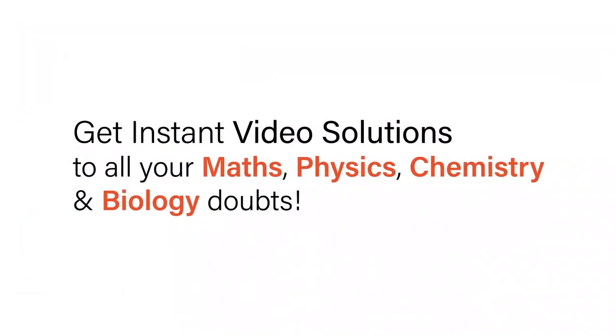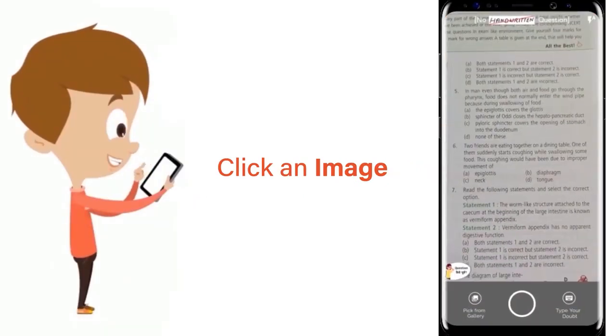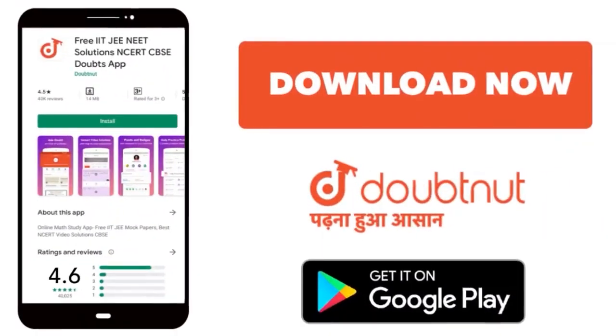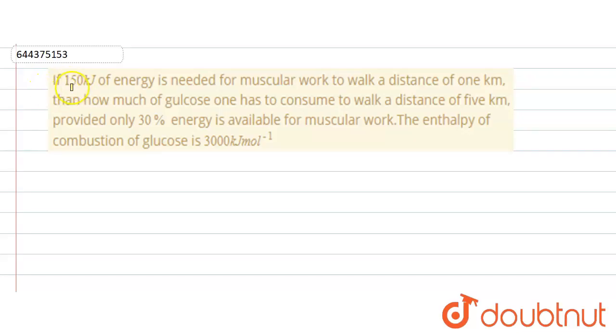With Doubtnet, get instant video solutions to all your maths, physics, chemistry and biology doubts. Just click the image of the question, crop the question and get instant video solution. Download Doubtnet app today. Our question is: 150 kilojoule of energy is needed for work to walk a distance of one kilometer.